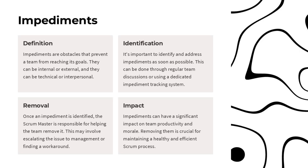Impediments are obstacles that prevent a team from reaching its goals. They can be internal or external, technical or interpersonal. It's important to identify and address impediments as soon as possible, through regular team discussions or a dedicated tracking system. The Scrum master is responsible for helping the team remove impediments, which may involve escalating issues to management or finding workarounds. Removing impediments is crucial for maintaining a healthy and efficient Scrum process, as they can have a significant impact on team productivity and morale.